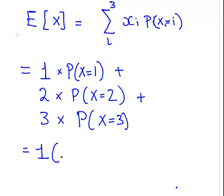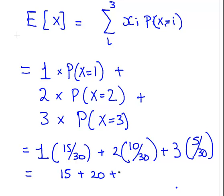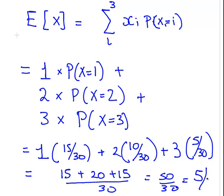That is 1 times 15/30, plus 2 times 10/30, plus 3 times 5/30. Working that out: 15 plus 20 plus 15, all over 30, gives 50/30, which simplifies to 5/3. So the expected value of x is 5/3.